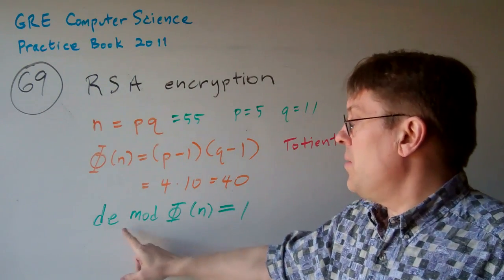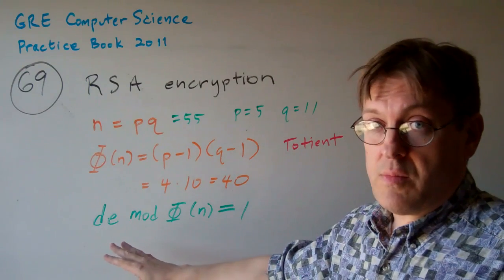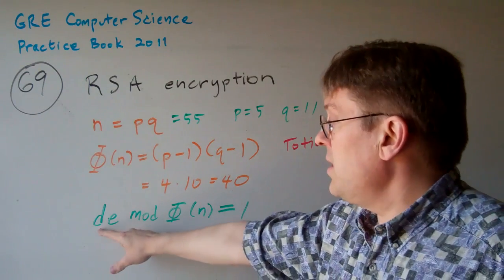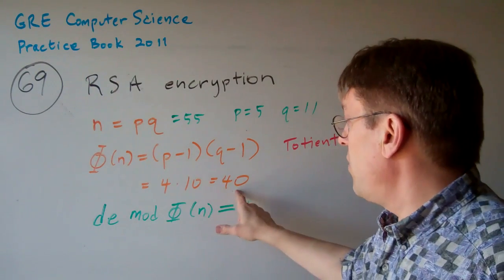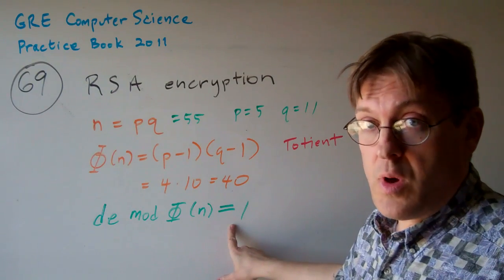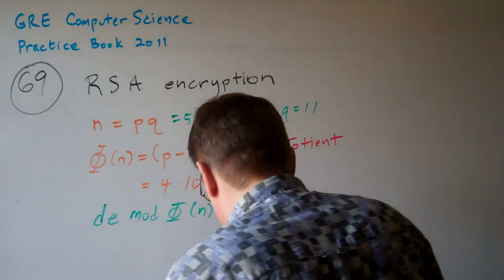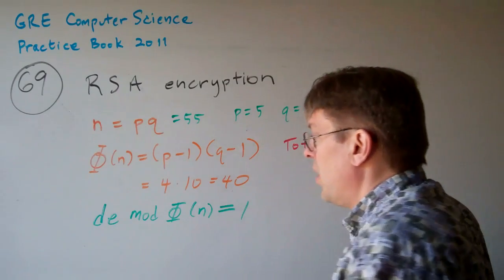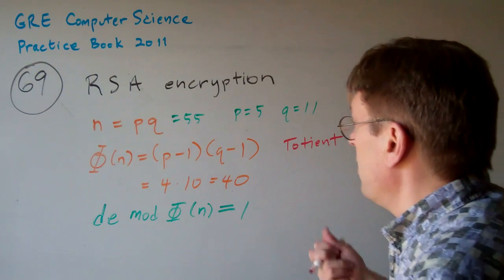D and E mod, this is for RSA encryption, D times E mod the totient, 40, should equal 1, or it does, it equals 1. So we have to kind of figure out what is the answer here.